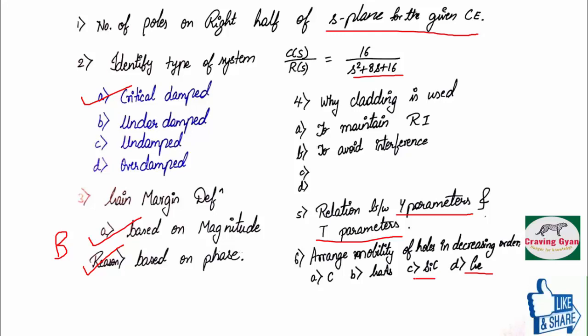Whenever you are going to add dopants, mobility decreases. You know mobility of electrons. We know mobility of electrons is greater than mobility of holes. Relate with this and solve the problem. And we know carbon is a good insulator.